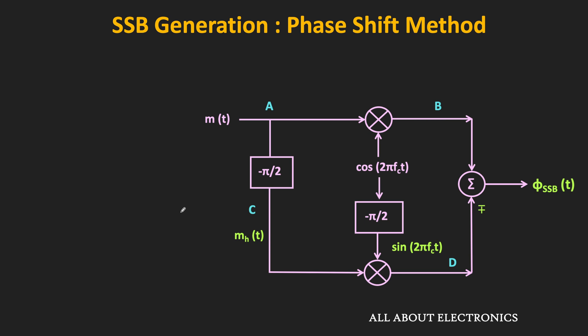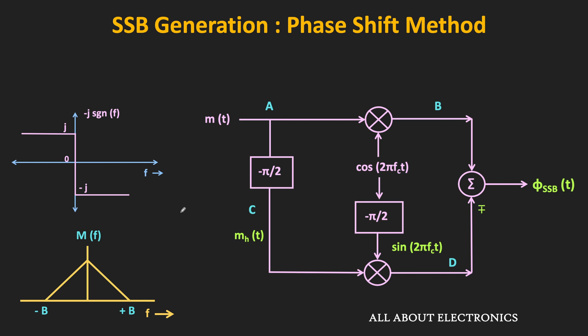Practically, there are some limitations when generating the SSB signal with the phase shift method. The first is that the ideal Hilbert phase shifter is unrealizable, because it requires an abrupt phase shift of π at zero frequency. Although it is possible to design a circuit providing a –π/2 phase shift, it is not possible to get a 180-degree abrupt phase shift at DC. So for signals with a DC or low frequency component, it is practically not possible to get the Hilbert transform. But for signals with a DC null or very little low frequency component, it is possible.